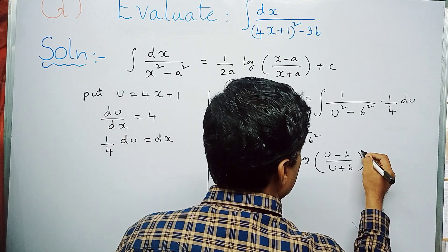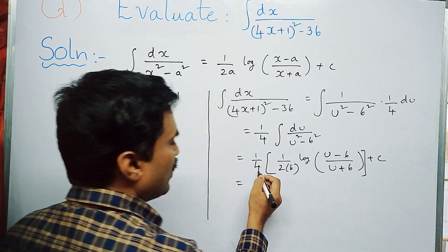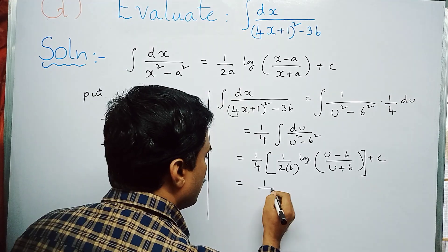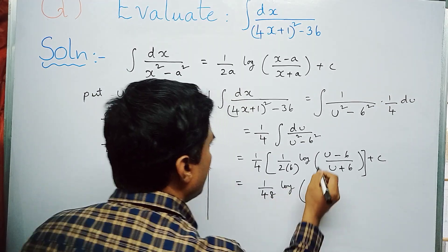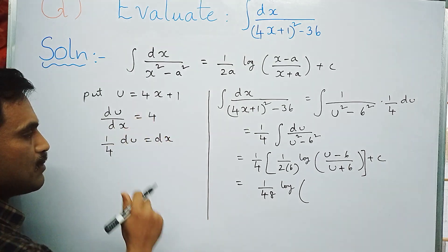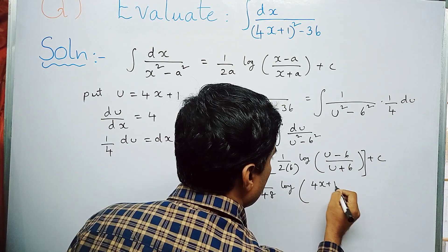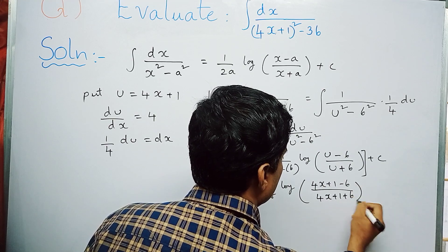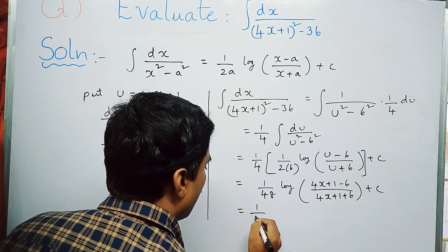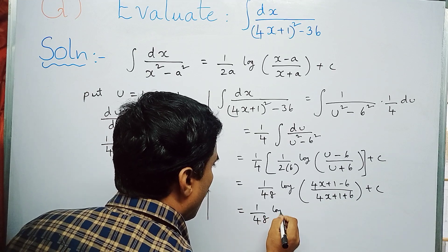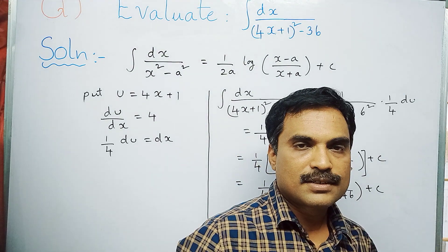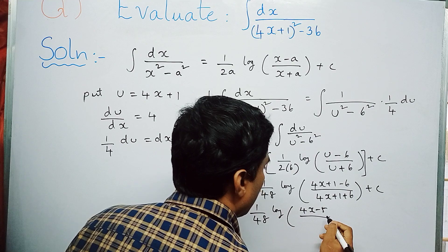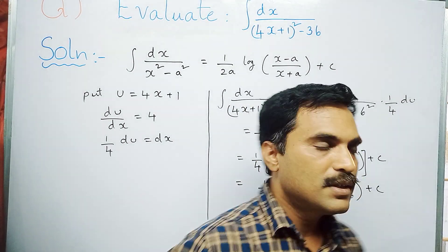Multiply: 4 times 2 is 8, 8 times 6 is 48, so you get 1 by 48 log. Now u is 4x + 1, so write 1 by 48 log of (4x + 1 - 6) by (4x + 1 + 6) plus c. After simplification: 1 by 48 log (4x - 5) by (4x + 7) plus c. This is the final solution.